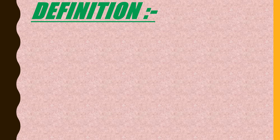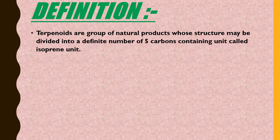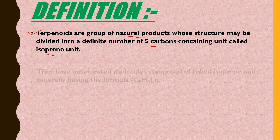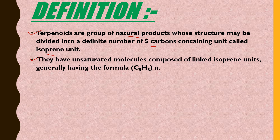The first topic we are going to study is the definition of terpenoids. Terpenoids is a group of natural products whose structure may be divided into a definite number of five-carbon-containing units called isoprene units. Terpenoids are natural products obtained from plants, and their structure is based on the isoprene unit — a five-carbon-containing unit.